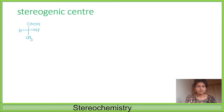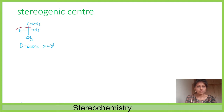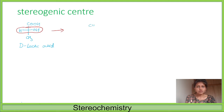If the OH group is on the right-hand side, it is known as D-lactic acid. Now suppose we want to change the position of two substituents — H and OH — then it will give an isomer. In this new structure, COOH, OH, hydrogen, and methyl are arranged so that the OH group is on the left-hand side, so it is L-lactic acid.